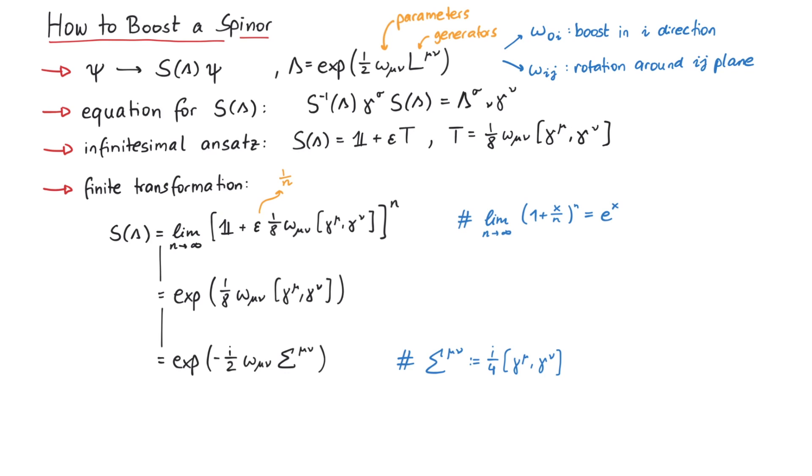So, if you for example want to describe a boost in y-direction with rapidity psi, then we have to choose omega 0 2 as psi.